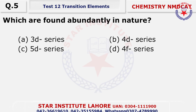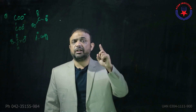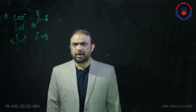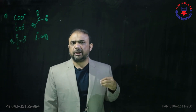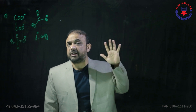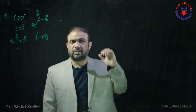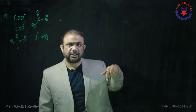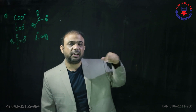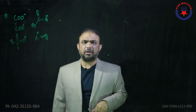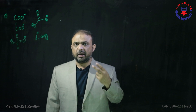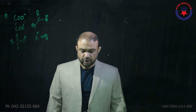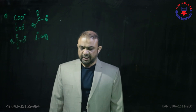Question number five: which are found abundantly in nature? The 3D series is most abundant. The reason is that it contains iron, and iron is five percent of the earth's crust. The most abundant metal in the world is aluminium at 8.3% of the earth's crust, and the second most abundant metal is iron. So the choice is 3D series.